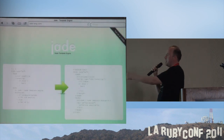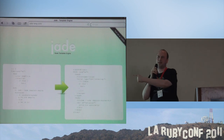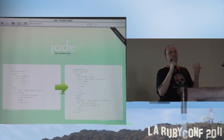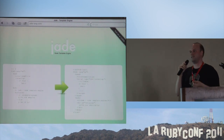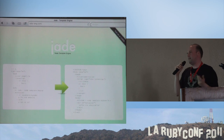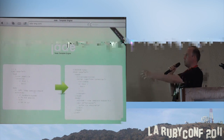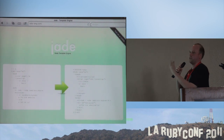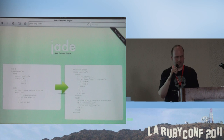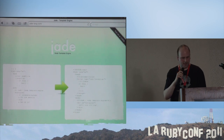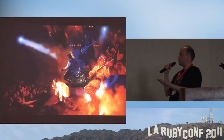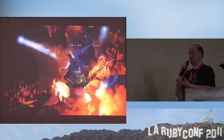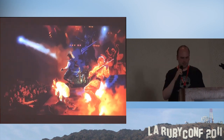One more thing: Jade, the templating engine — I mentioned this a couple of times — it's basically Haml but for Node.js. And where you would normally use a Ruby hash, you use a JavaScript hash. Long story short, Node.js is pretty awesome.